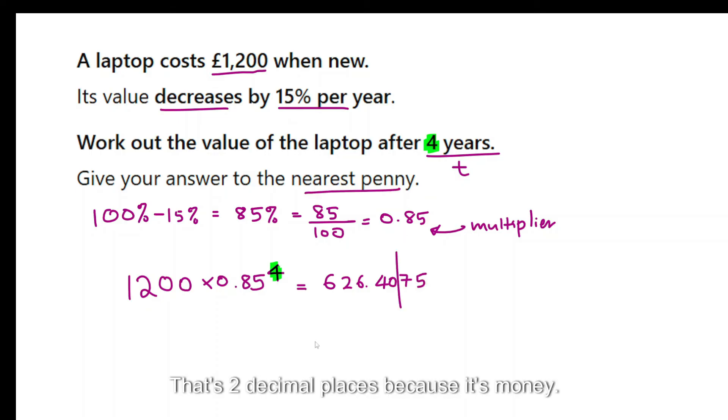two decimal places because it's money. So I get £626 and 41 pence because there's a 7 here, that's more than 5, so I have to add one to it.